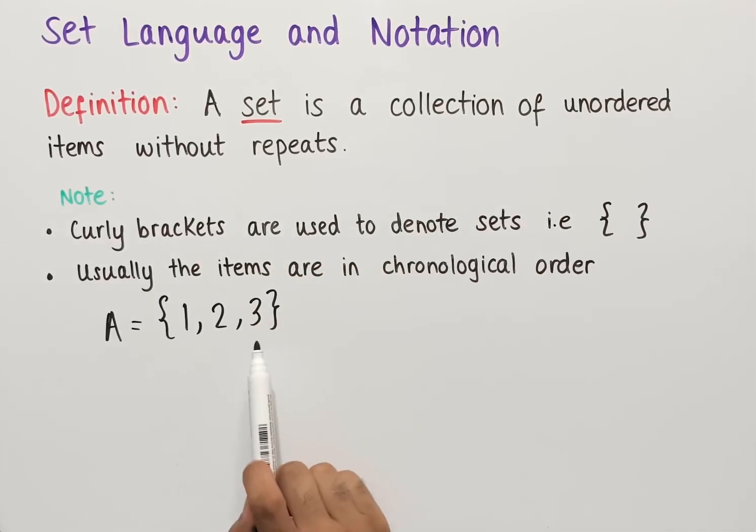We use commas to distinguish between the items within the set, so 1, 2, and 3 are separate numbers within this set which is called A.